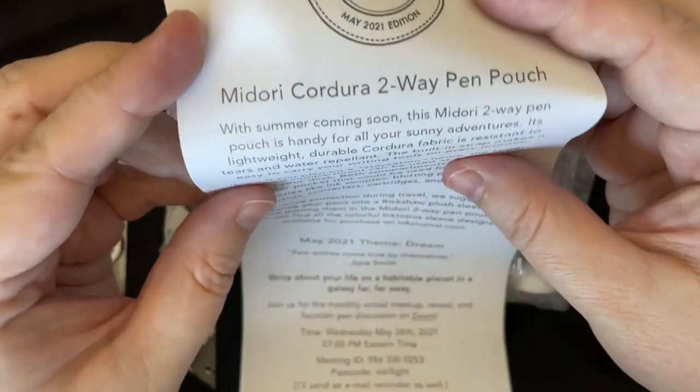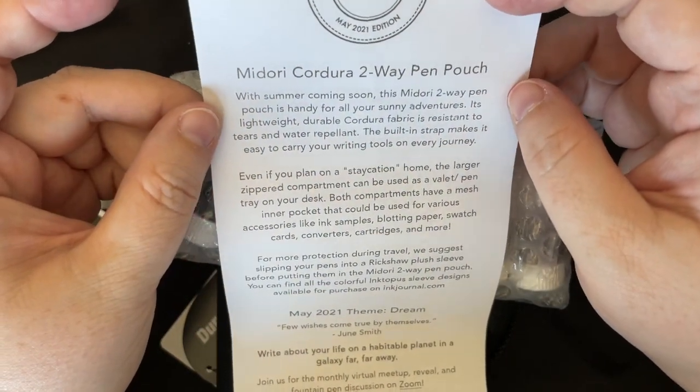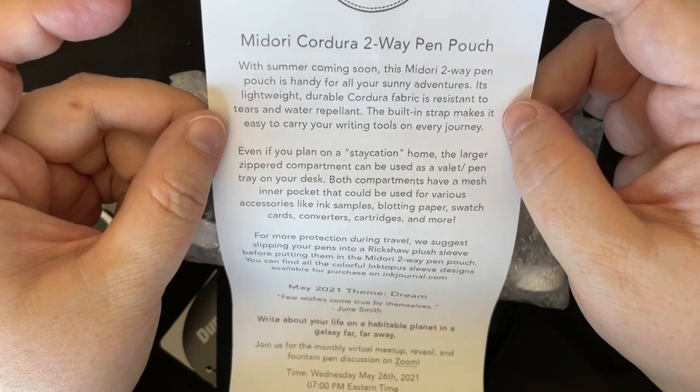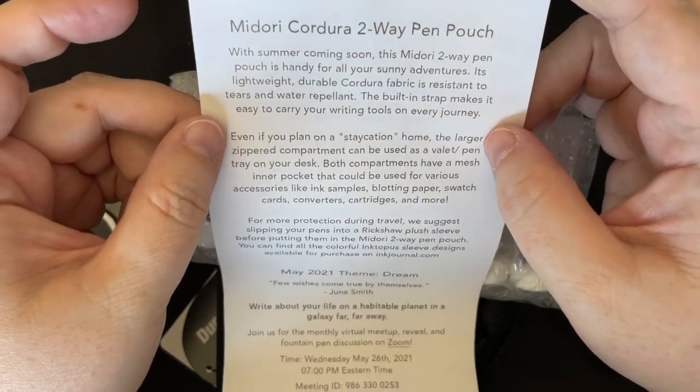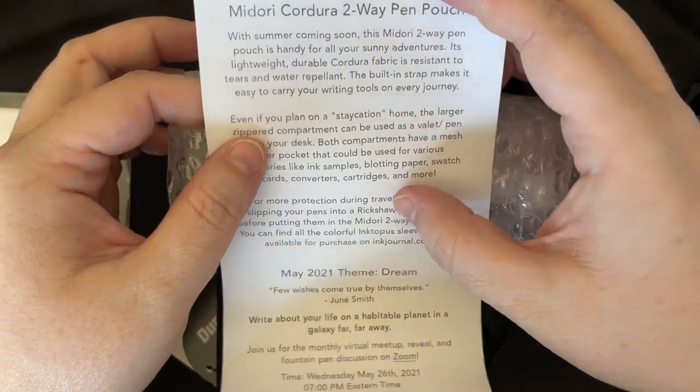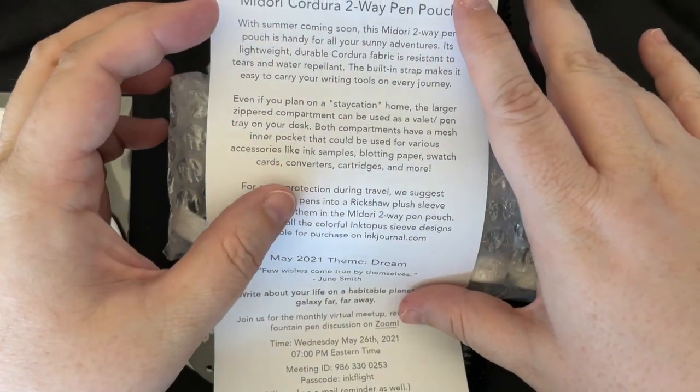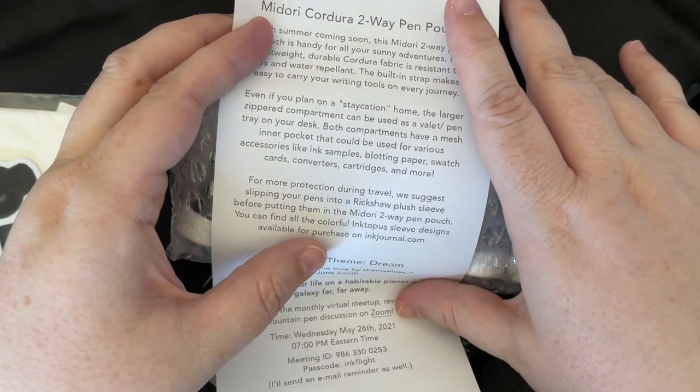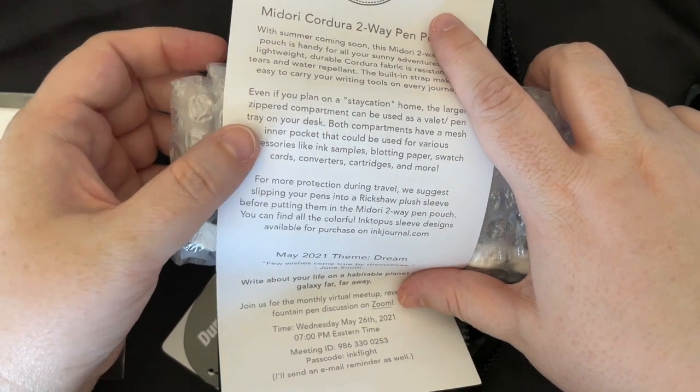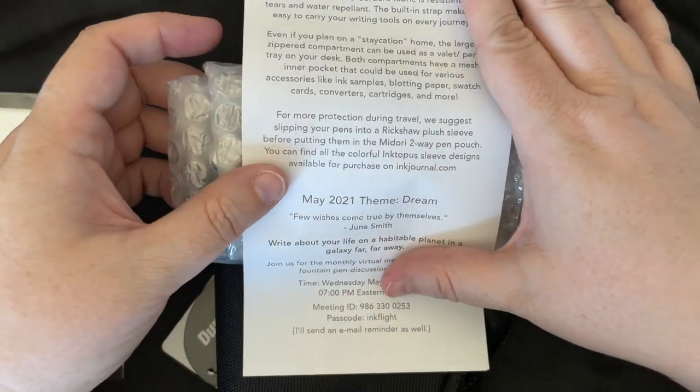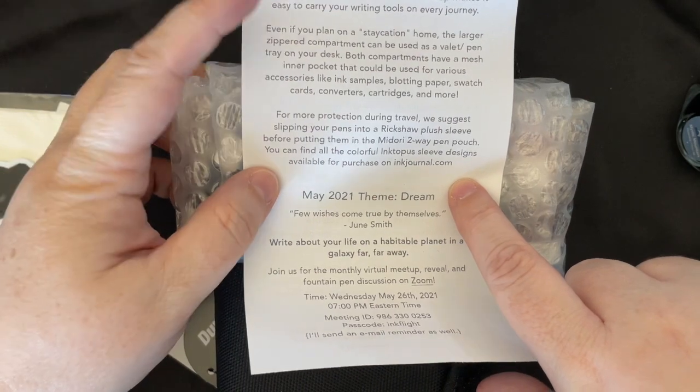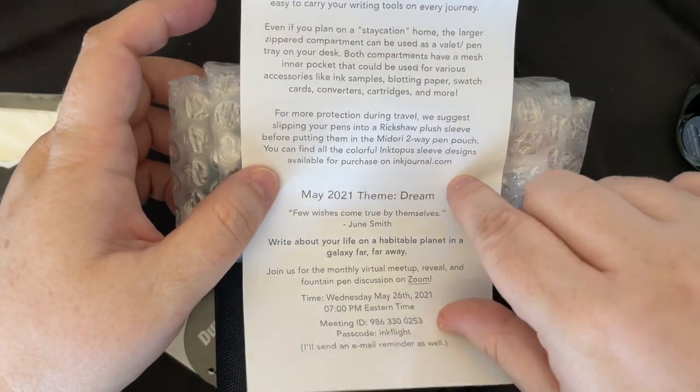The mini Cordura two-way pen pouch. With summer coming soon, the Midori two-way pen pouch is handy for all your sunny adventures. Its lightweight, durable Cordura fabric is resistant to tears and water repellent. The built-in strap makes it easy to carry your writing tools on every journey. Even if you plan a staycation home, the larger zippered compartment can be used as a valet pen tray on your desk. Both compartments have a mesh inner pocket that could be used for various accessories like ink samples, blotting paper, swatch cards, converters, cartridges, and more.